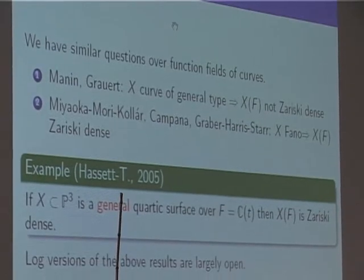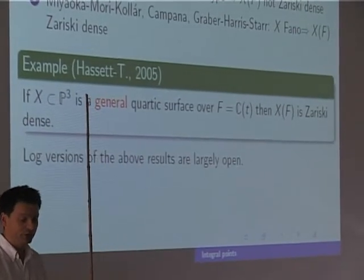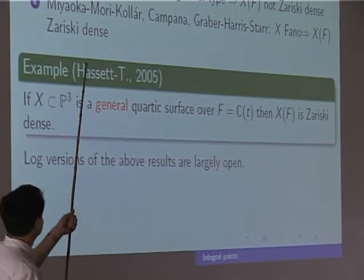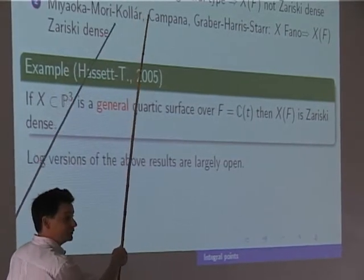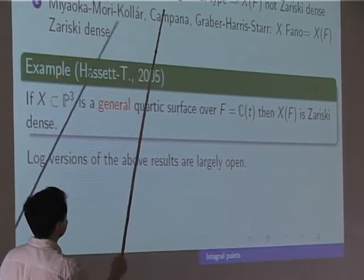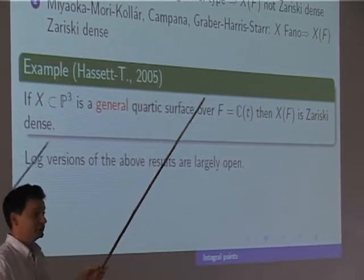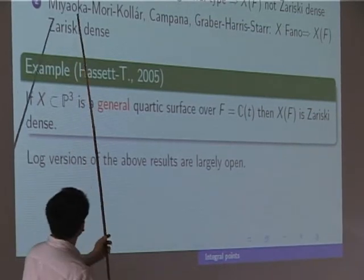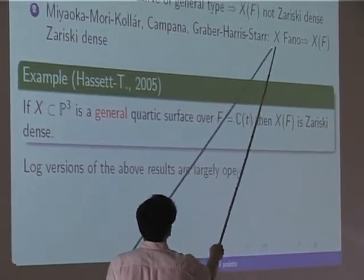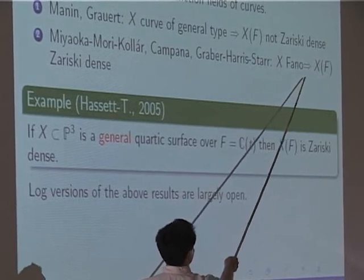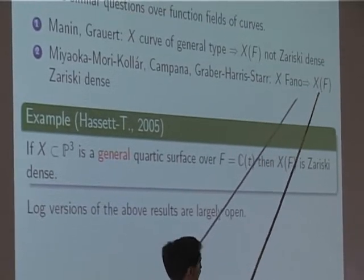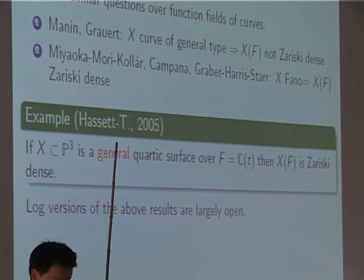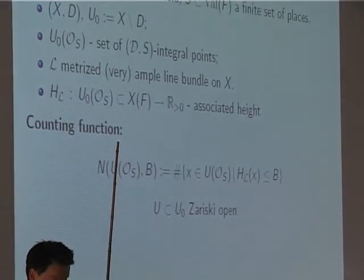We hope to push the technique to show that any quartic K3 over a function field has this property. The log versions of these density results over function fields — integral points where F is the function field of a curve — are quite interesting and open. Even the analog asking whether integral points are potentially dense when X is log Fano is open and an interesting question.